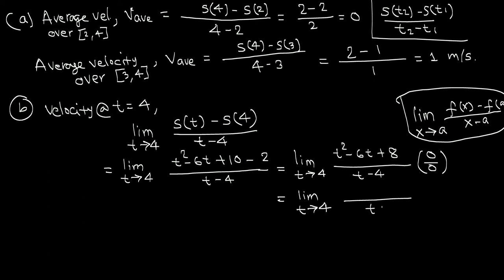We need to cancel the zero-making factor from the top and bottom. The denominator is already t minus 4. The numerator is a trinomial: t squared minus 6t plus 8, which factors as (t minus 4)(t minus 2). The (t minus 4) terms cancel. Now replacing t with 4 gives 4 minus 2, which is 2. So the instantaneous velocity at t equals 4 is 2 meters per second.